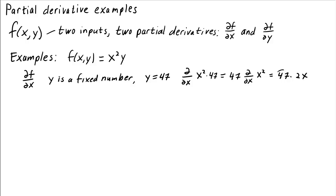Now, of course, this 47 is just y. So what we can conclude is that the partial derivative of f with respect to x is y times 2x, or we could write it as 2xy.